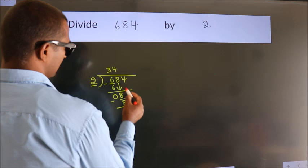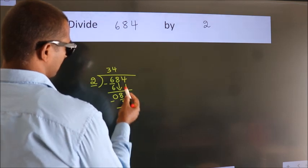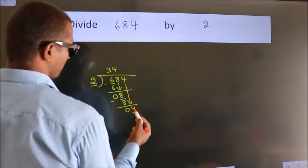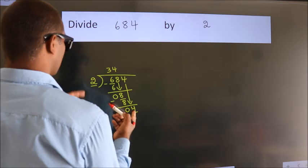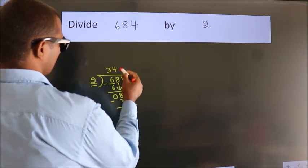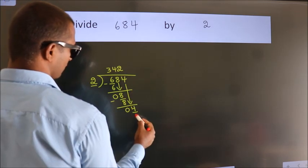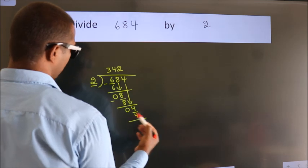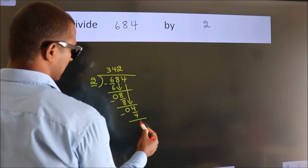After this, bring down the beside number. So 4 down. So 4. When do we get 4? In 2 table. 2 twos, 4. Now we subtract. We get 0.